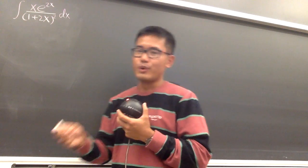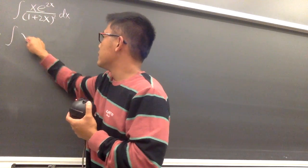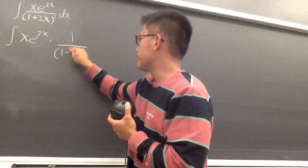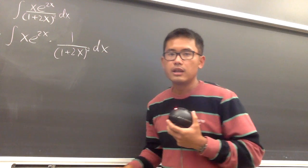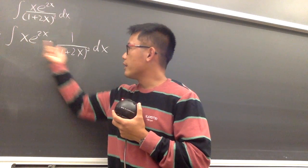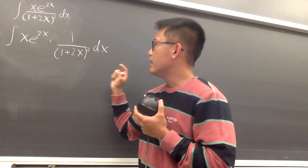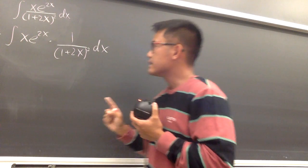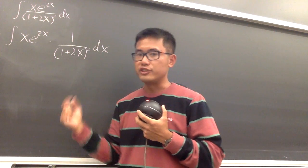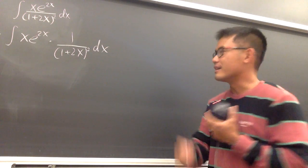Let's look at it this way. If you look at the top and bottom separately, we can look at this integral as x times e to the 2x times 1 over parentheses 1 plus 2x squared dx. The reason I do that is because if you focus on each part separately, we know how to integrate both parts. As long as I know how to integrate one part and differentiate the other, that means I can do integration by parts. I'll show you with the DI method.